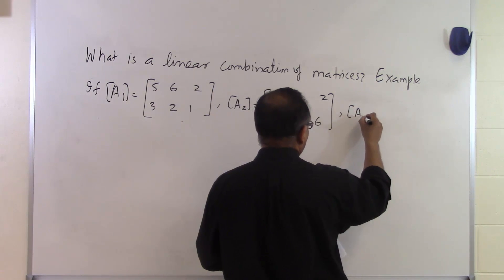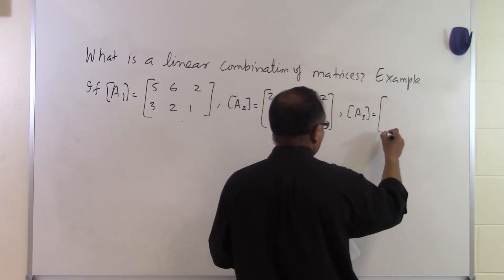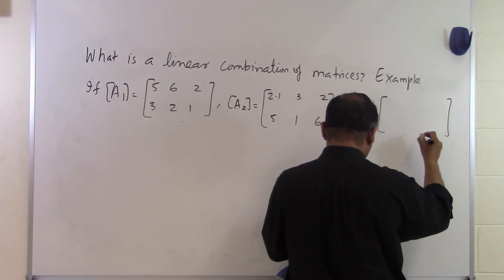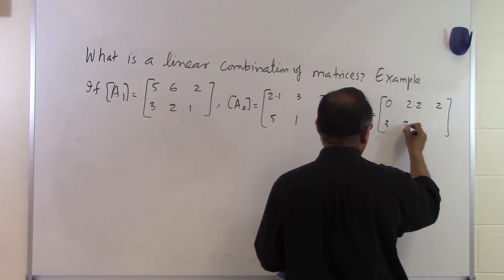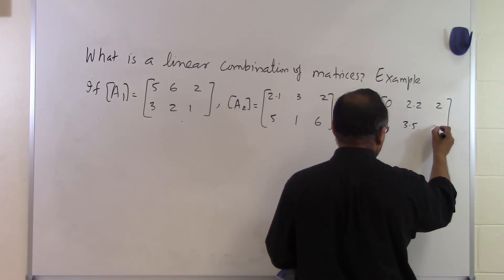Another matrix A3 is given to you and that's 0, 2.2, 2, 3, 3.5, and 6.